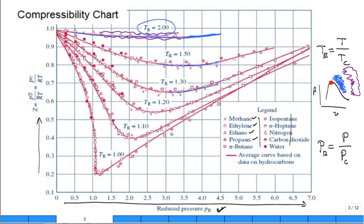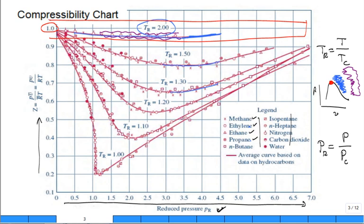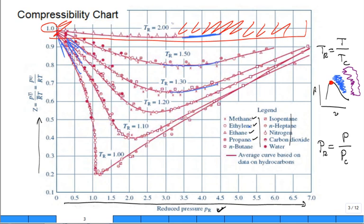If Z is anywhere around 1 — a little above or a little below — it's behaving as an ideal gas. We can see two trends: at very low reduced pressure, it behaves as an ideal gas regardless of temperature, because all curves converge toward 1. And if you have a high T_r — hot compared to the critical point — it behaves as an ideal gas regardless of pressure. So ideal gas behavior occurs when P_r is much less than 1, as well as when T_r is greater than 1.